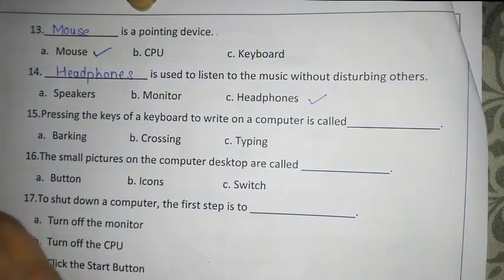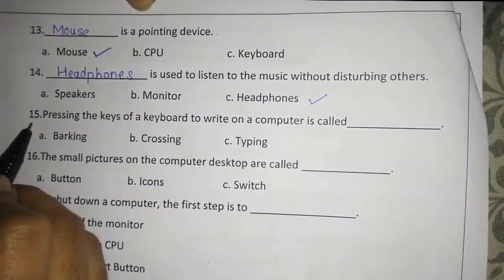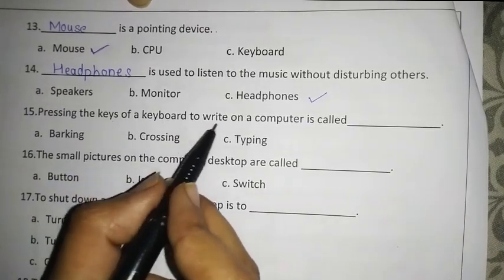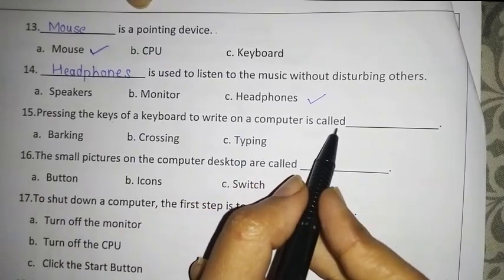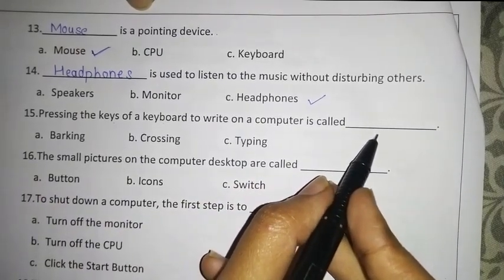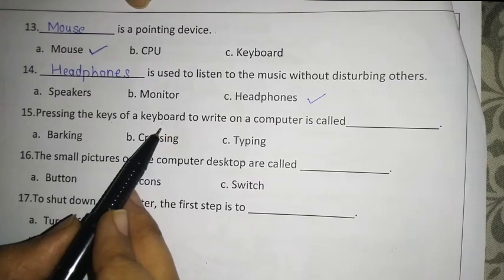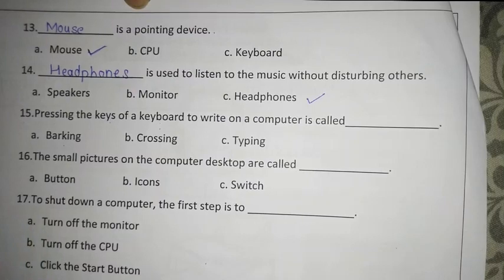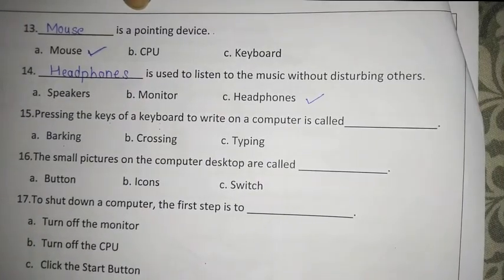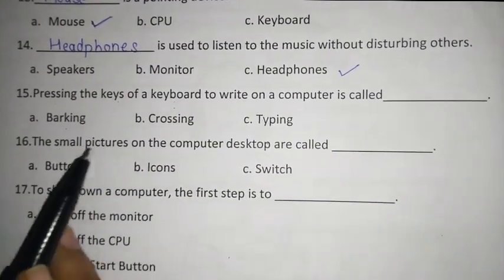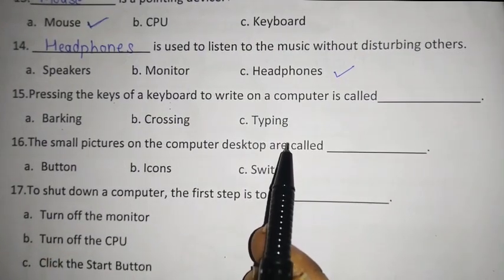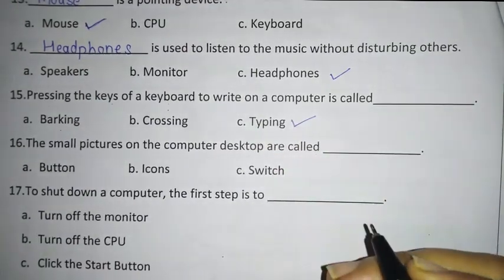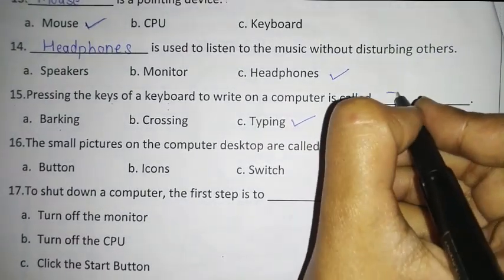Now let's move to fifteenth question: Pressing the keys of a keyboard to write on a computer is called dash — is it called barking? No, that is what a dog does. Crossing? No. And typing? Yes. So give a tick over typing. Very good! Write here: typing.